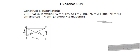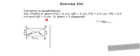Construct a quadrilateral PQRS in which PQ = 4 cm, QR = 3 cm, PS = 2.5 cm, PR = 4.5 cm, and QS = 4 cm. PR and QS are the two diagonals.